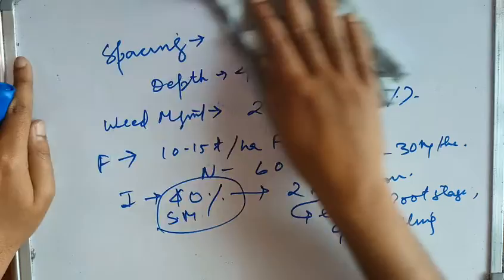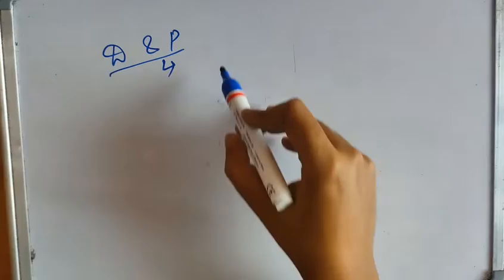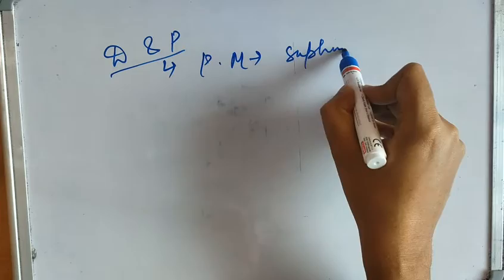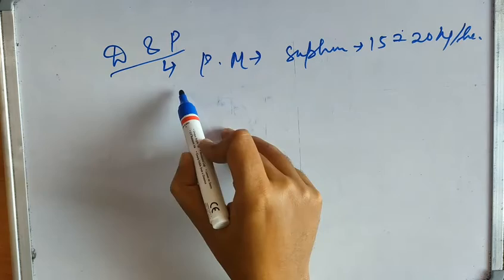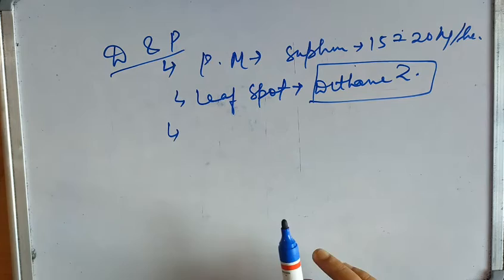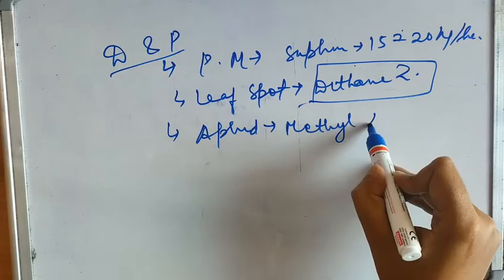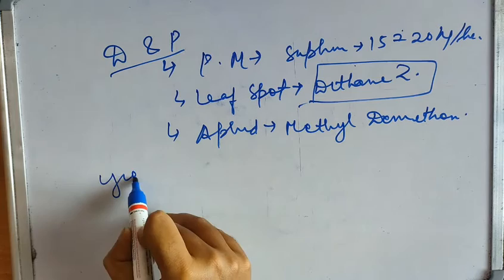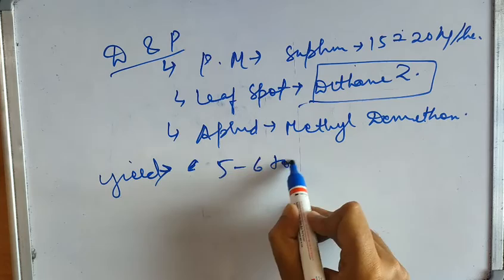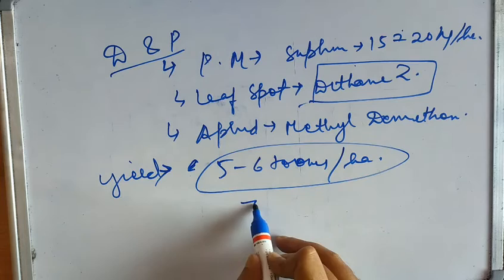For disease and pest management in sorghum: powdery mildew is treated with sulfur at 15 to 20 kg per hectare; for leaf spot, Dithane is used; for aphids, Methyldemeton is applied. Yield is around 5 to 6 tons per hectare in Kharif season, and 3 to 4 tons per hectare in Rabi and summer seasons.